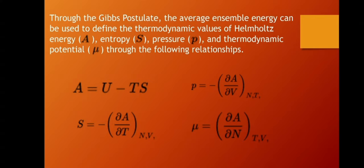Through the Gibbs postulate, the average ensemble energy can be used to define the thermodynamic values of Helmholtz's energy (A), entropy (S), pressure (p), and thermodynamic potential (mu), through the following relationships. Helmholtz's energy is equal to internal energy minus temperature times entropy, while pressure is equal to the negative change in Helmholtz's energy over change in volume.